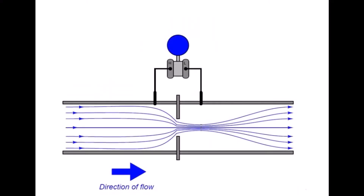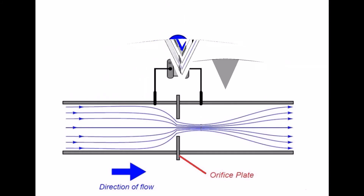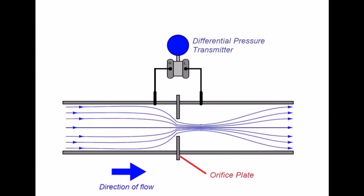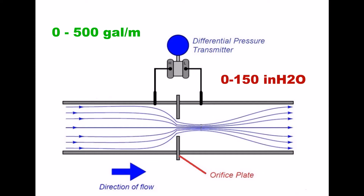Prior to configuring the transmitter, it is absolutely necessary that we know the maximum flow rate to be measured and the differential pressure produced by the primary element at that flow rate. In the following demonstration, the maximum flow rate will be 500 gallons per minute with a corresponding differential pressure of 150 inches of water.